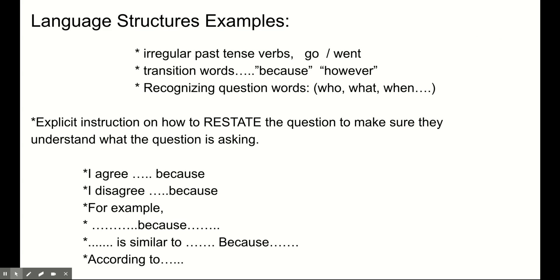Some of the language structure examples that an ESOL student might need include explicit teaching of irregular past tense verbs — like 'go' and 'went' — which might prohibit their comprehension of a reading, lecture, or video. Transition words, even as simple as 'because' or 'however,' which might cause confusion, as well as recognizing transition words.